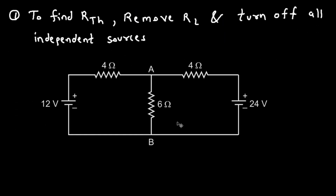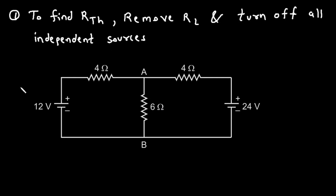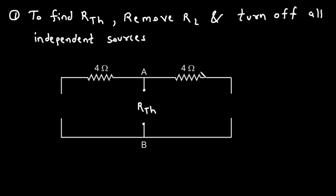So here, if we remove this load resistor RL, this will be our RTH — that is, Thevenin's resistance. Now we have to turn off this voltage source and this voltage source. When we turn off a voltage source, it will be replaced by a short circuit. And when we turn off a current source, we have to replace that by an open circuit. But here both are voltage sources, so we are replacing them with a short circuit.